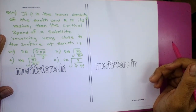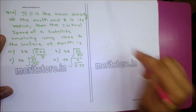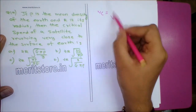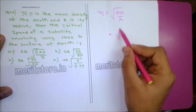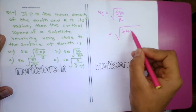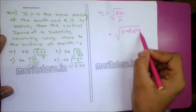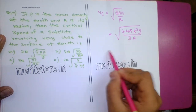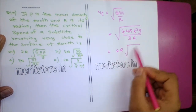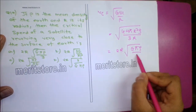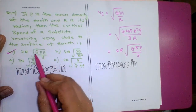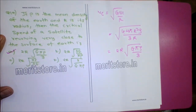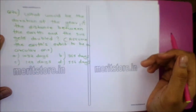Question 19: If ρ is the mean density of the Earth and R is its radius, the critical speed of a satellite revolving very close to the surface is: Vc = √(GM/R) = √(G × (4/3)πR³ρ / R) = 2R√(GπΡ/3). Option A, 2R√(GπΡ/3), is the correct answer.